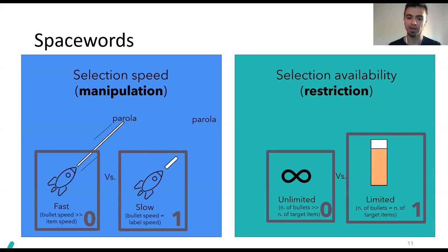And we assign an orthogonal score to each of these variations in order to account for their similarity to standard annotation tools, zero, versus games, one. For example, if the bullets are unlimited, then the mechanic is similar to a traditional annotation tool, because users can click as many times as they want.